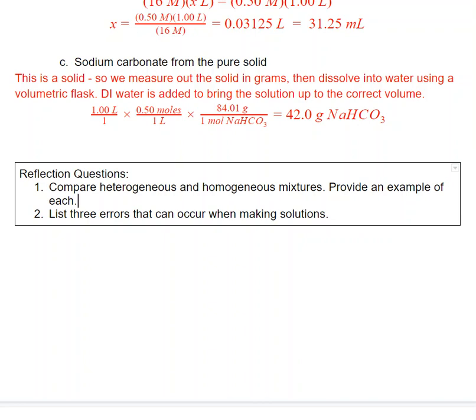Three errors that can occur when making solutions. There's more than that, but we could incorrectly measure out the mass of a solid, or we could accidentally add too much or too little water to the volumetric flask. We could not accurately know the concentration of our stock solution. We can mismeasure the stock solution when we measure its volume. There's also human errors like poor experimental technique. Maybe you don't get all of the solid off of the filter paper. All of those are things that can go wrong.